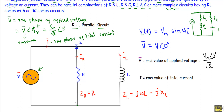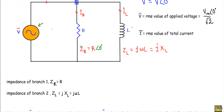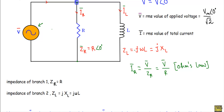If branch one carries impedance ZR equal to R∠0°, and branch two has impedance ZL equal to jωL or jXL, then using Ohm's law we can calculate the currents IR and IL flowing in each branch. Using Ohm's law: IR equals voltage over impedance ZR, or V over R. IL equals V over ZL, or V over jωL.